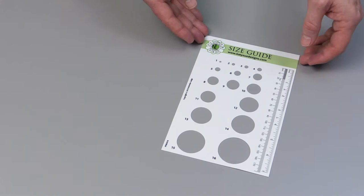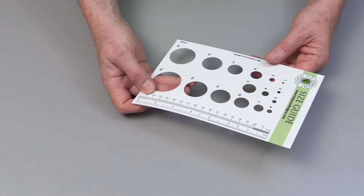This is the Flower Pro Plastic Size Guide. The plastic size guide, the original one was made from cardboard.